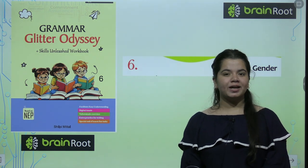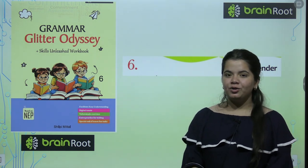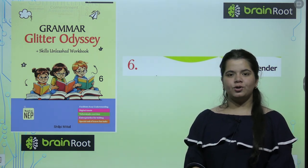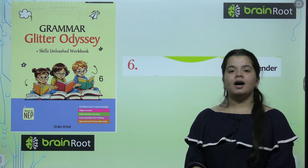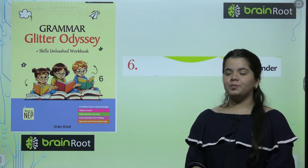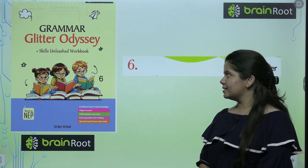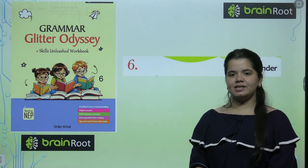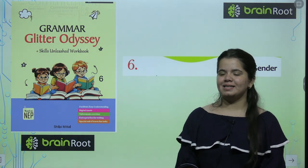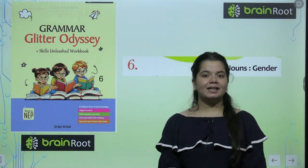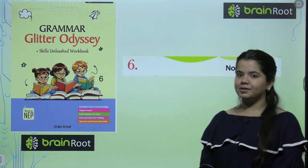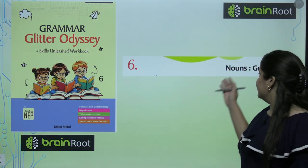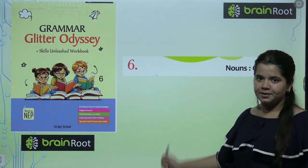Hello everyone, how are you doing? Today we are going to start with another chapter from your English book. We are studying the Brain Root series and the name of our book is Grammar Glector Odyssey of Class 6. Today we are going to start a new chapter, and our chapter's name is Nouns Gender.